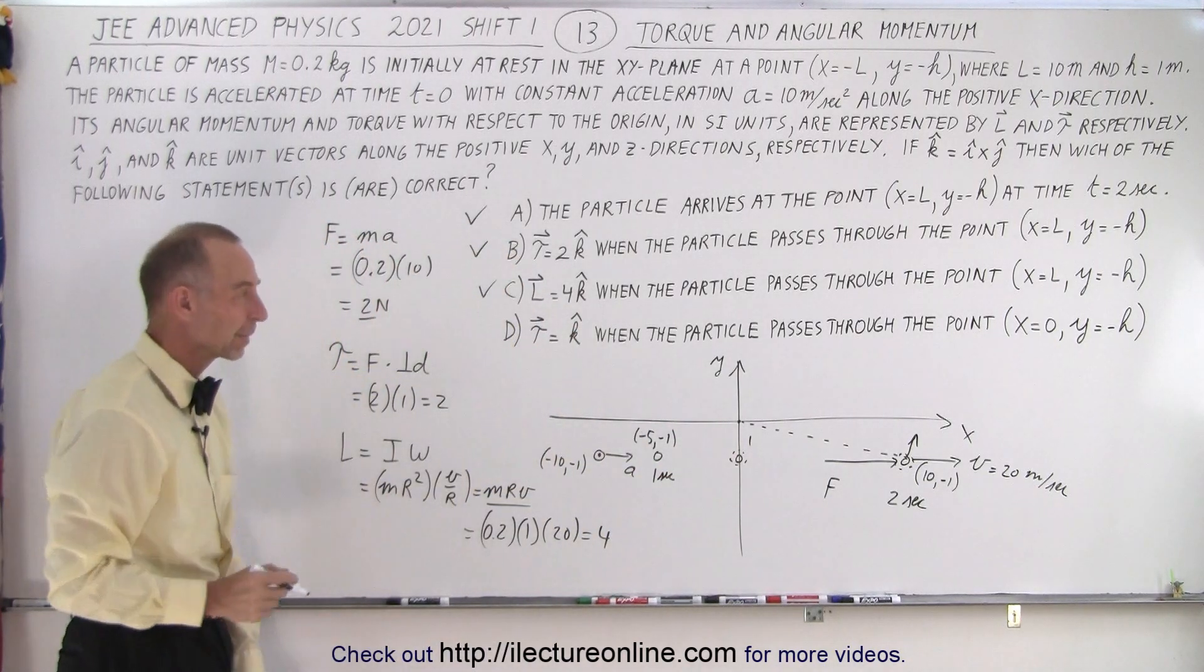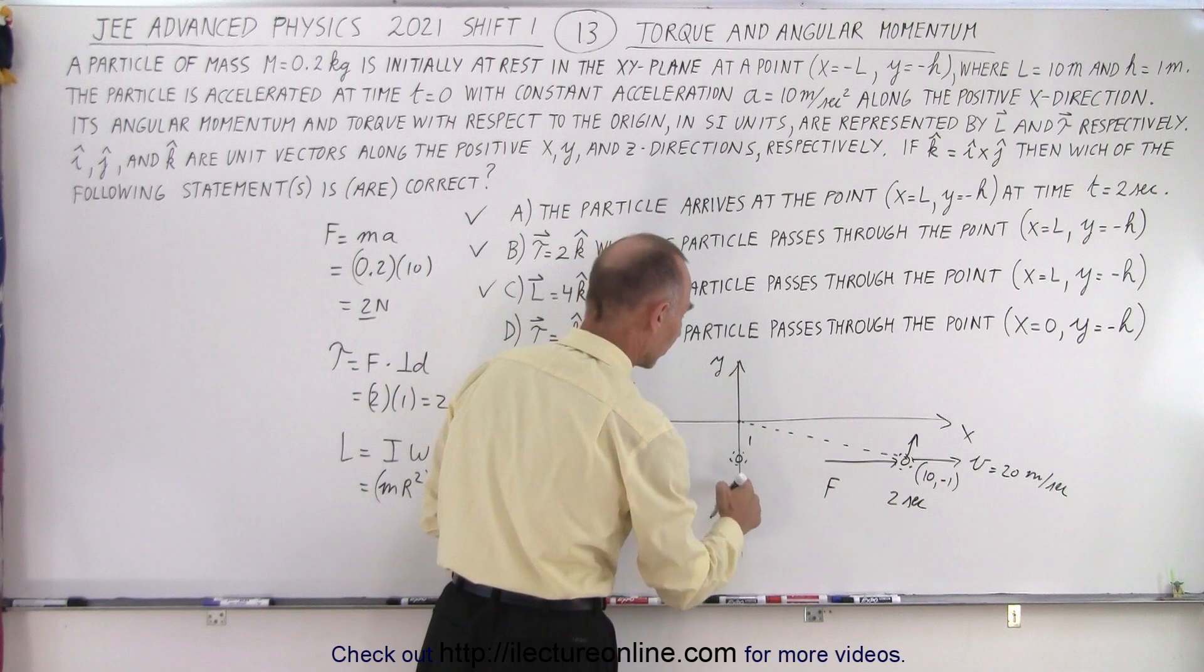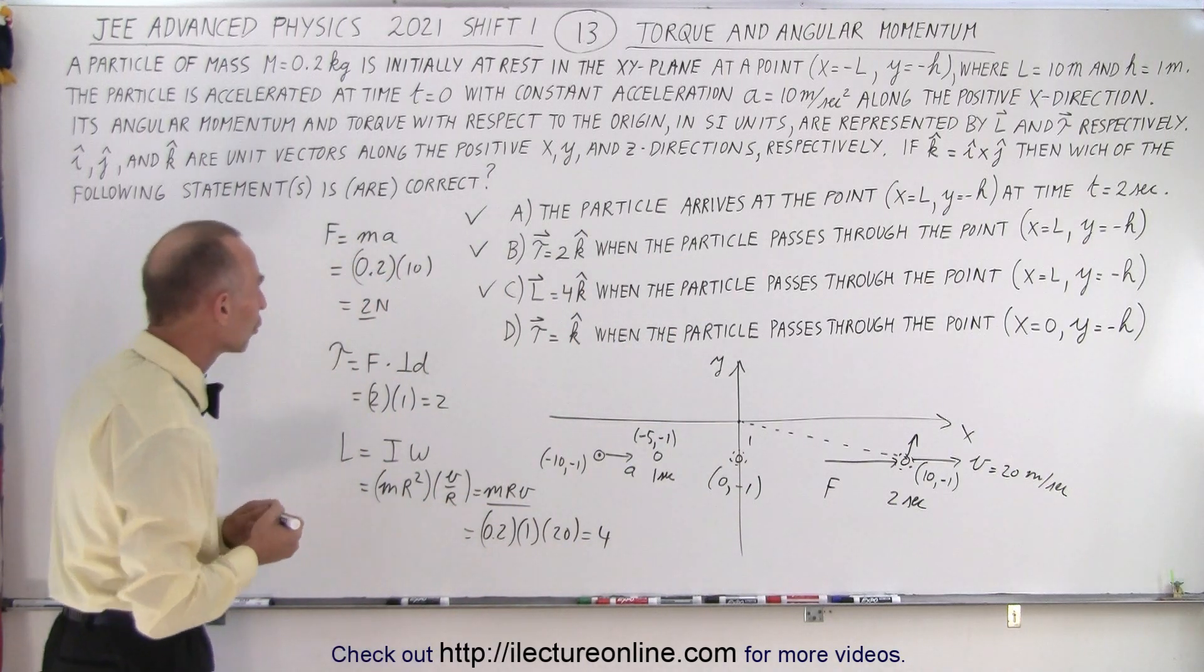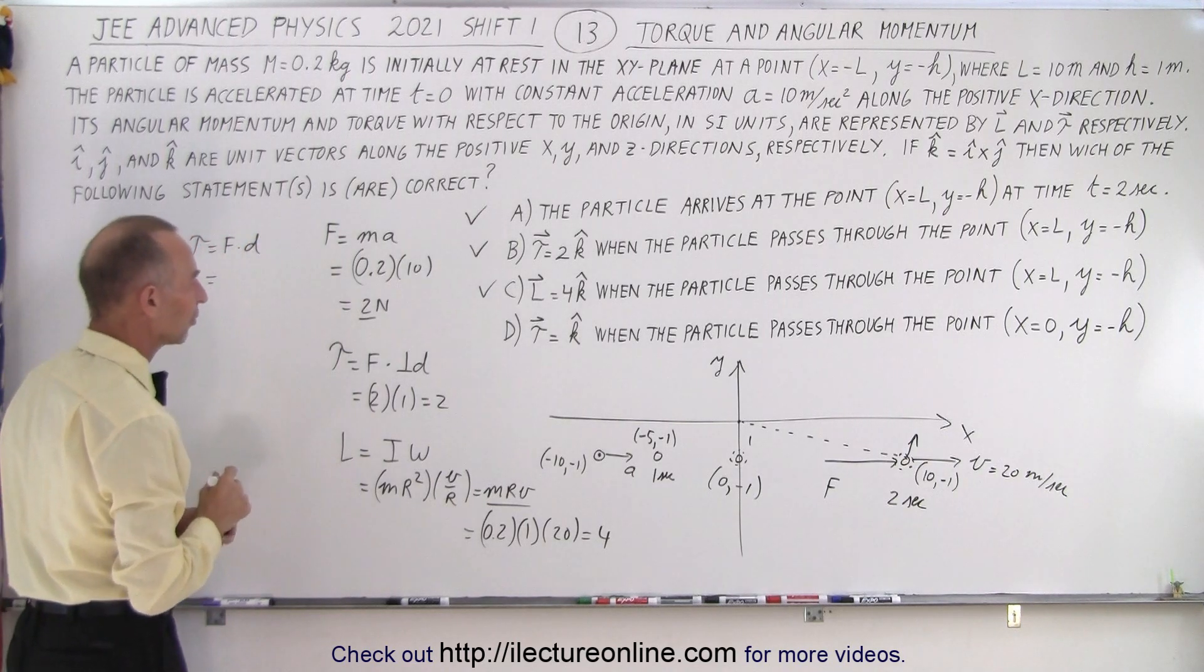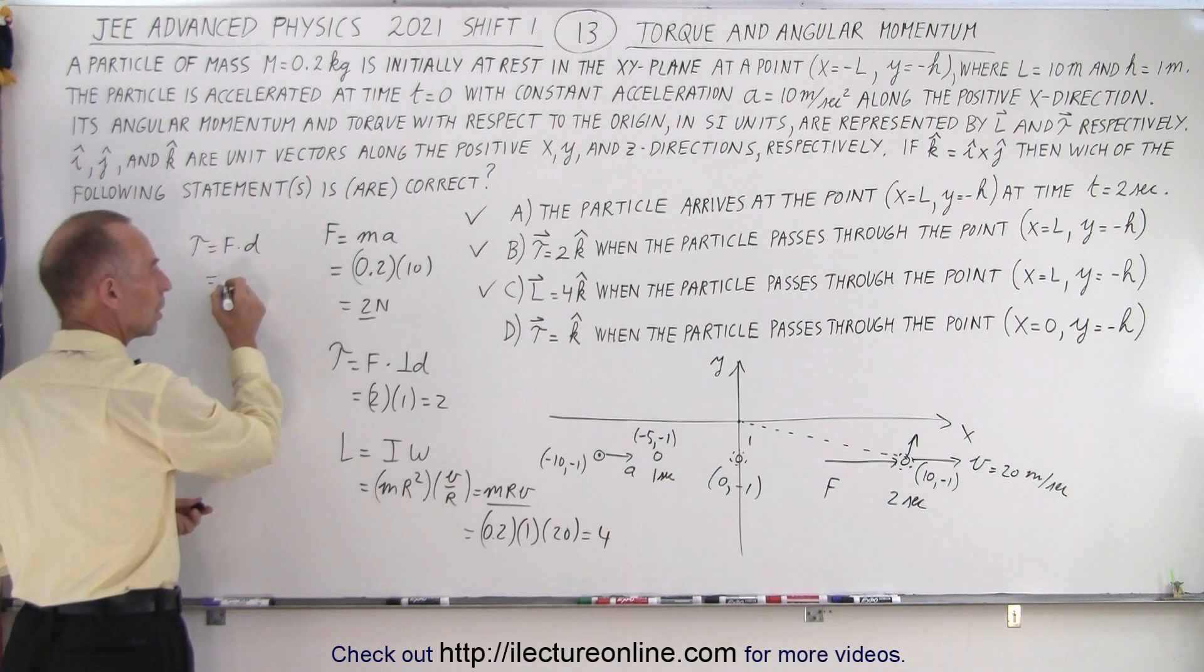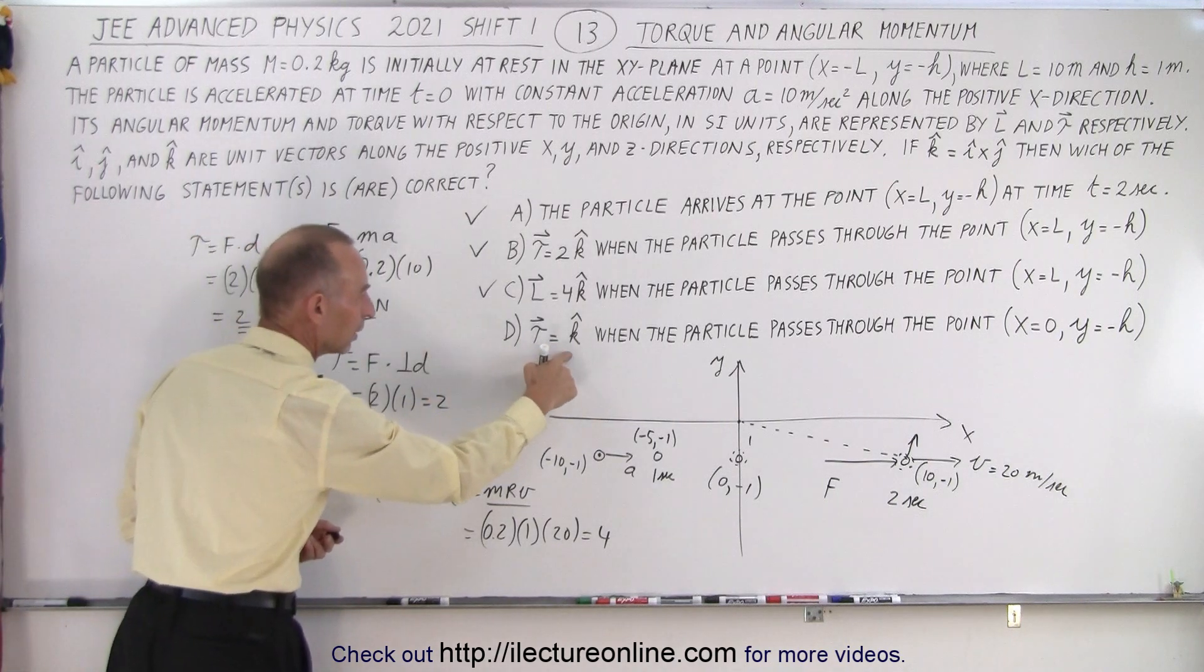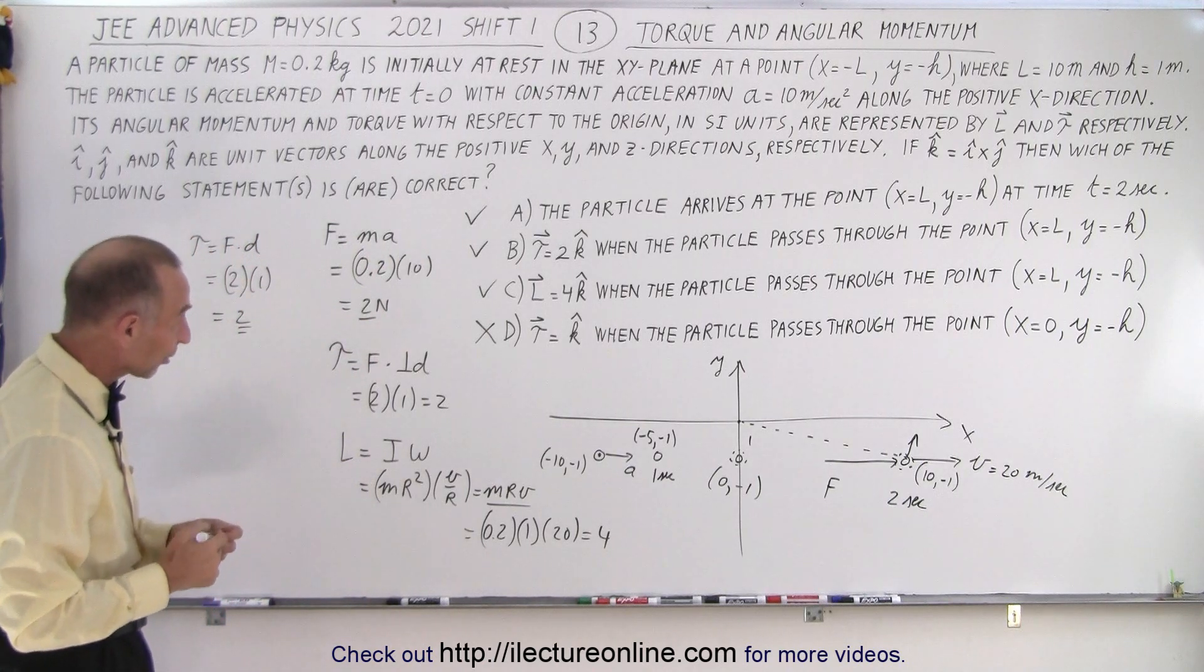Finally, the torque equals k when the particle passes through the point x equals 0 and minus h. So this is the point 0, minus 1, or h. And so we need to know the torque, and again, the torque is equal to force times distance. And the force, the particle passes through the point, so the force would be equal to, let's see here, the force is equal to 2 and the distance equal to 1, so it gives you 2. And 2 is not equal to 1, so this is not a correct answer.